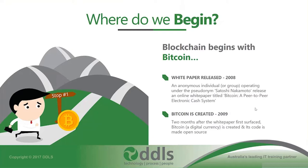Blockchain begins with something you may already be familiar with: Bitcoin. Bitcoin is a type of digital currency that first started to emerge in late 2008, as we were going into the peak of the global financial crisis. During that time, an anonymous individual or group operating under the pseudonym Satoshi Nakamoto released an online white paper titled 'Bitcoin: A Peer-to-Peer Electronic Cash System.' This nine-page document detailed how to create a completely digital form of currency enabling individuals to transact directly without relying on intermediaries like banks or clearing houses.